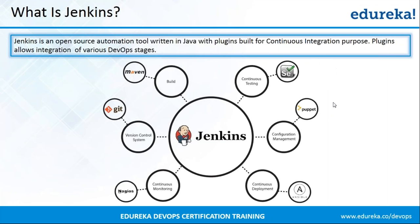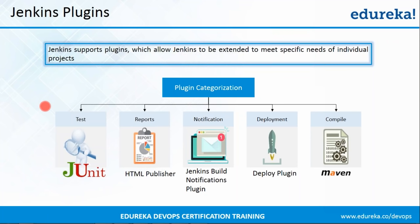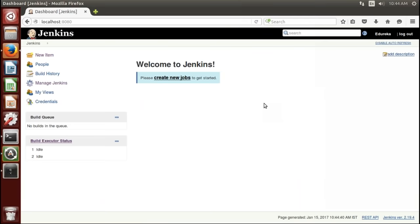Let us go back to our slides and see the various categories of plugins. Jenkins achieves continuous integration with the help of plugins, and it supports well over a thousand plugins. There are certain plugins for testing like JUnit, Selenium, etc. For reports there are plugins like HTML Publisher. For notification there is the Jenkins Build Notification plugin. For deployment there are plugins like the Deploy plugin. For compile there are plugins like Maven, etc.